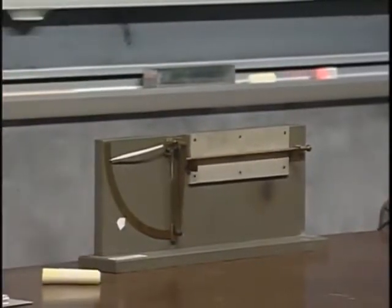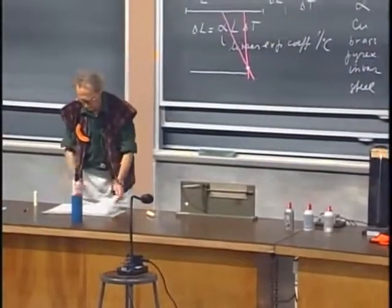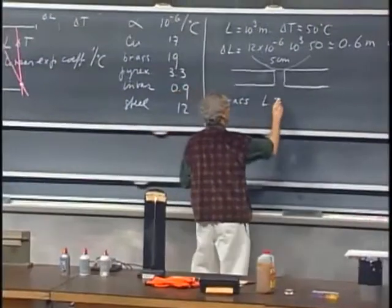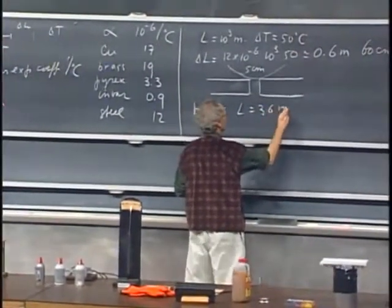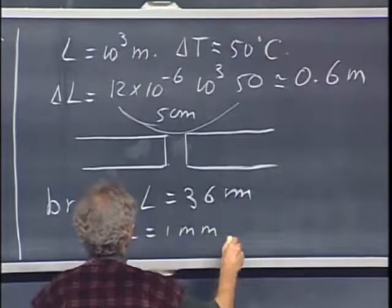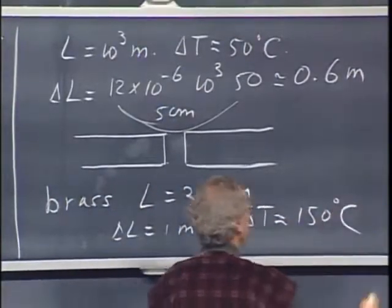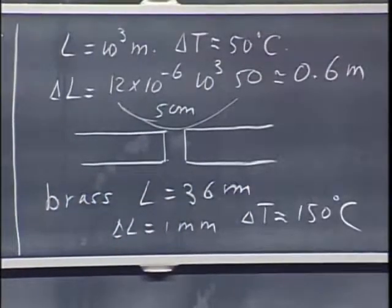There it goes. Doesn't take very much. So we have brass, and L is 36 centimeters. Delta L would be about one millimeter for a temperature increase of only 150 degrees centigrade, which is trivial for us with that blowtorch.